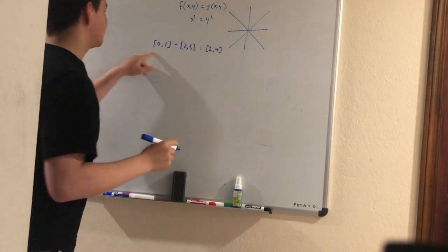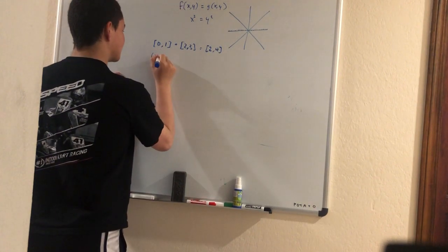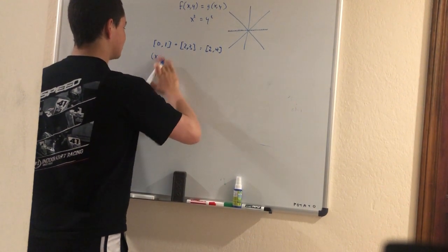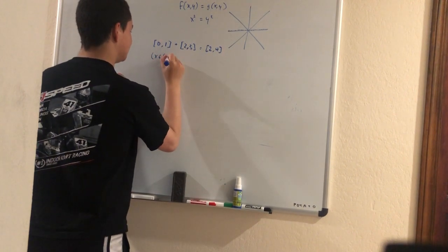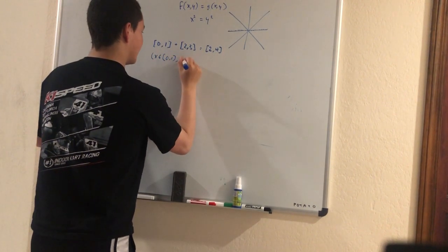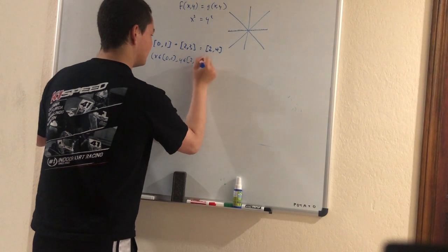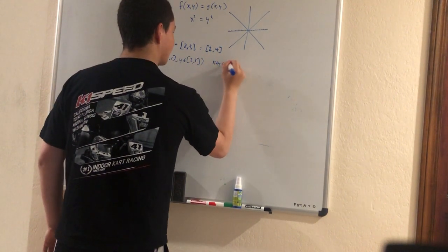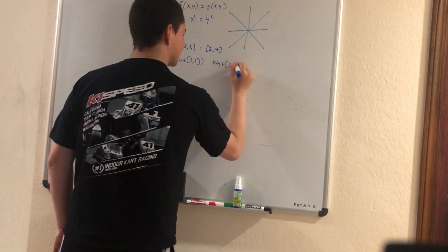And the reason why is, for all pairs x, y, where x is in [0, 1] and y is in [2, 3], then their sum x plus y is in this interval [2, 4].